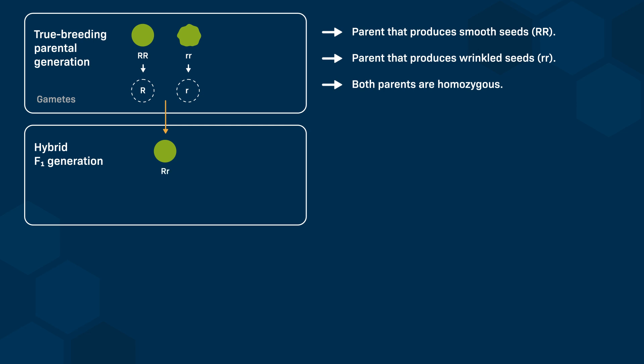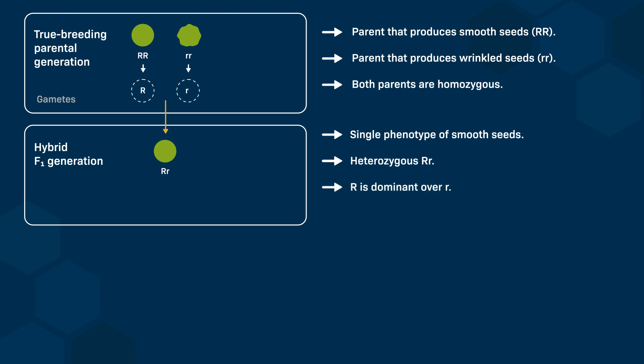He observed that all plants in the F1 generation displayed the same phenotype: smooth peas. This can be explained by these plants being heterozygous — they carried an uppercase R allele and one lowercase r allele. The smooth phenotype (uppercase R) is dominant over the wrinkled phenotype (lowercase r). Plants from the F1 generation all contain a combination of uppercase R from one parent and lowercase r from the other parent, and must produce smooth peas.